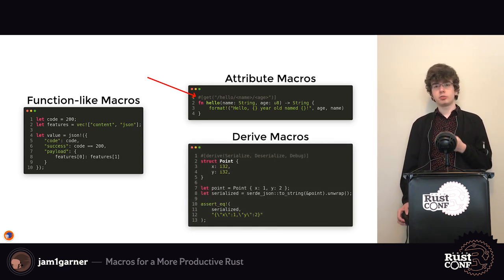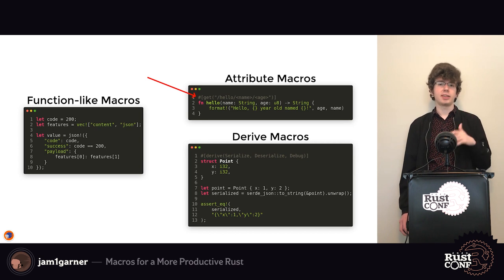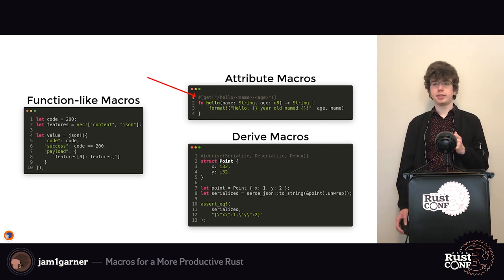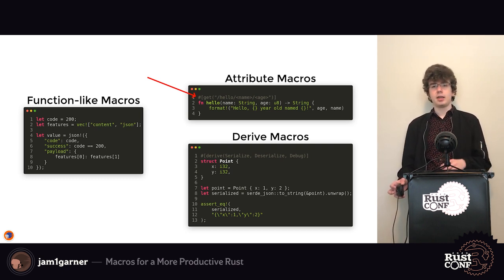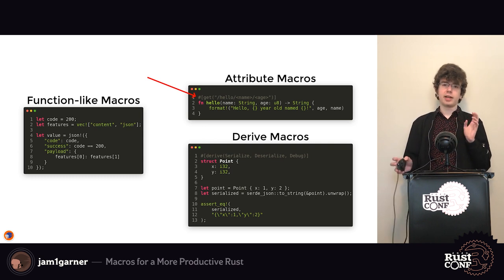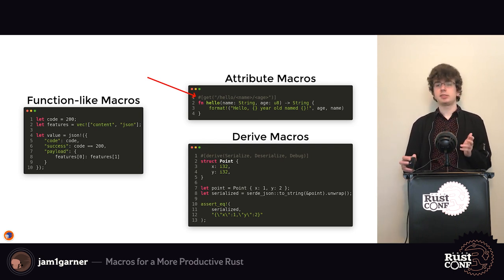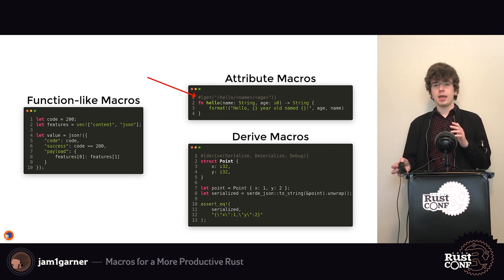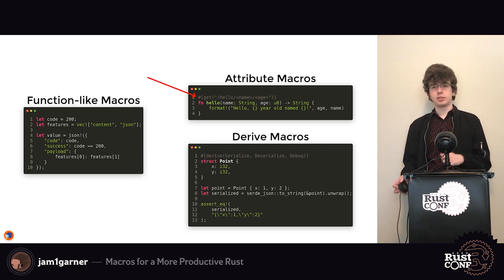Lastly we have derive macros. If you're familiar with Rust you probably know about deriving things like Clone, Debug, or Copy. Derive macros let you create your own derive handler for automatically implementing a trait. An example is from serde, which lets you derive `Serialize` and `Deserialize` for arbitrary structs or enums and then serialize or deserialize them to and from any format that supports serde — for example, `serde_json` for JSON strings.